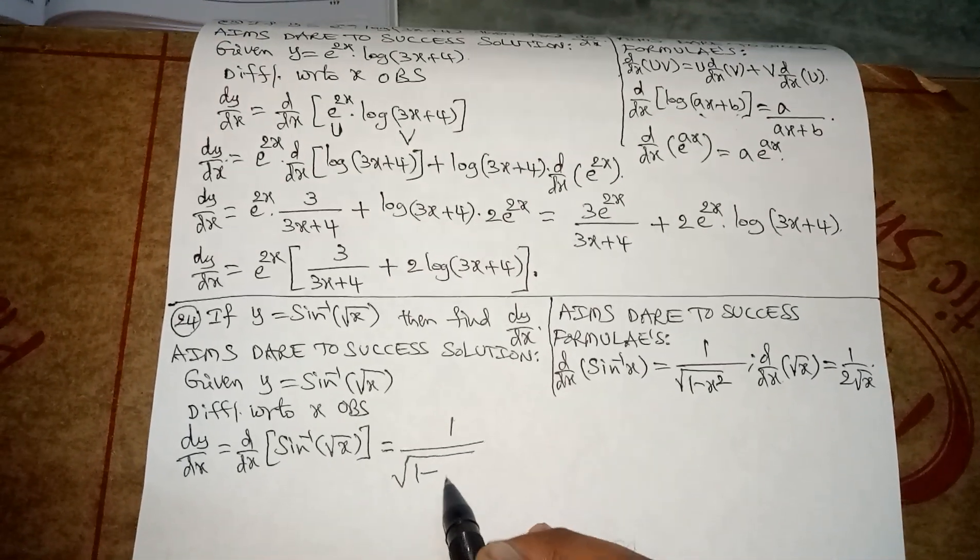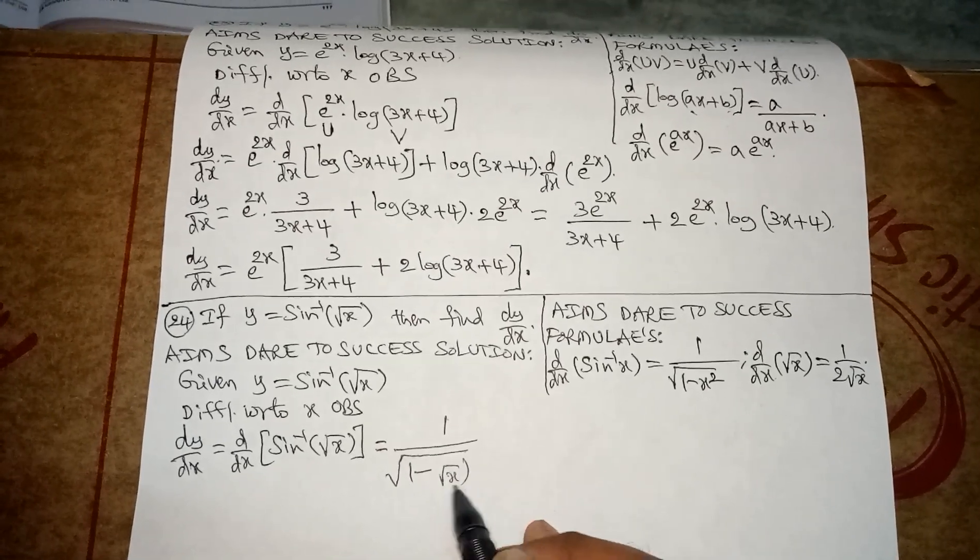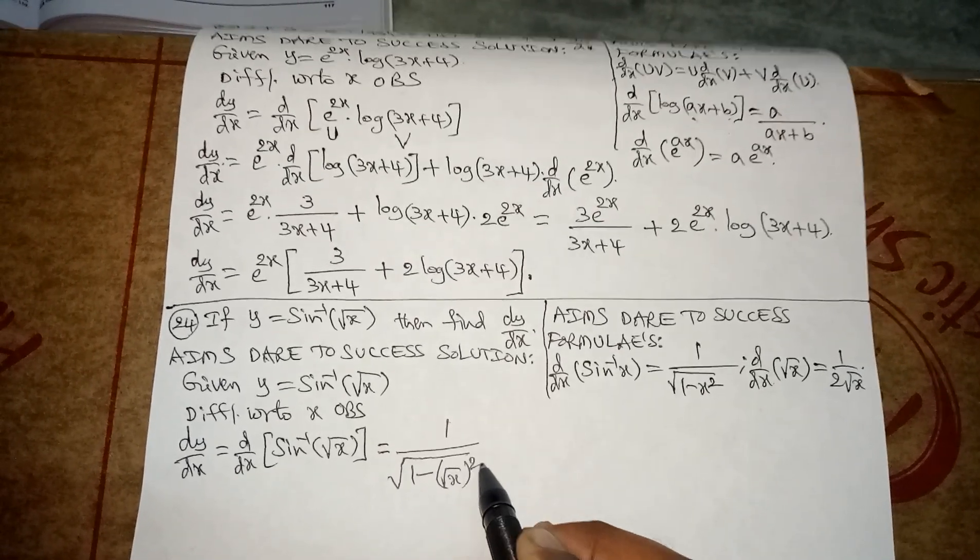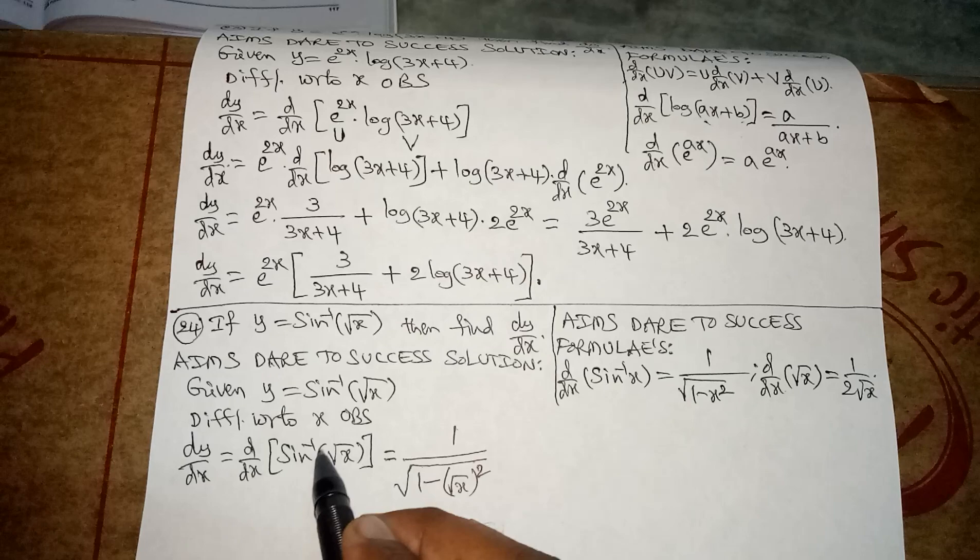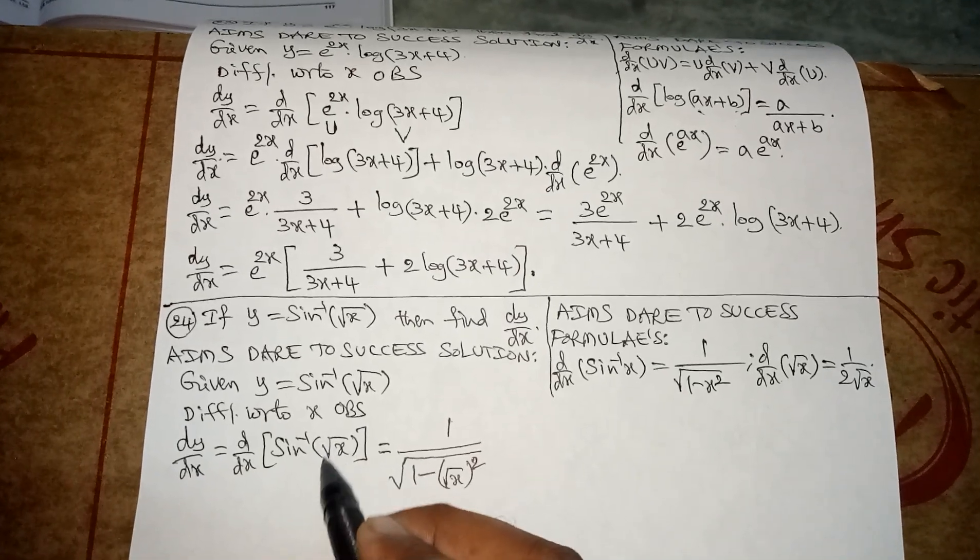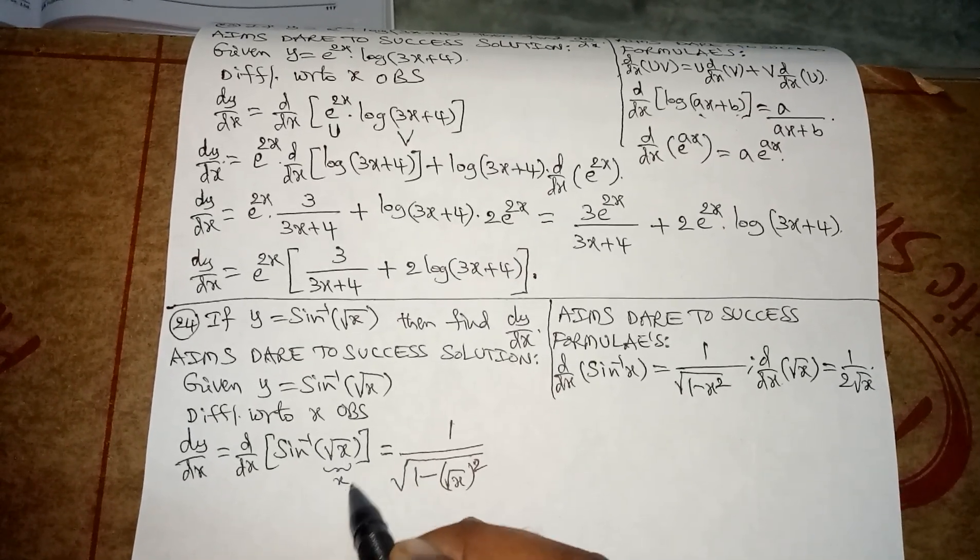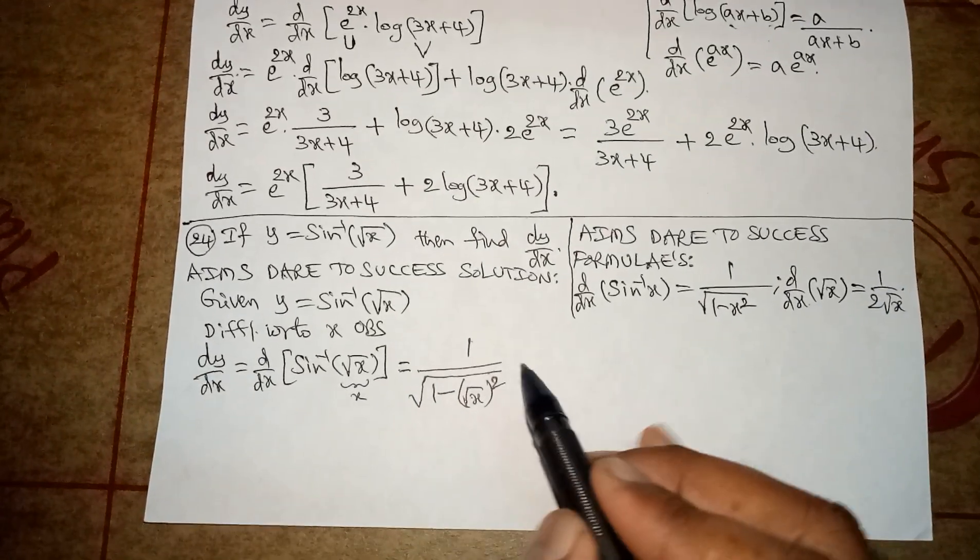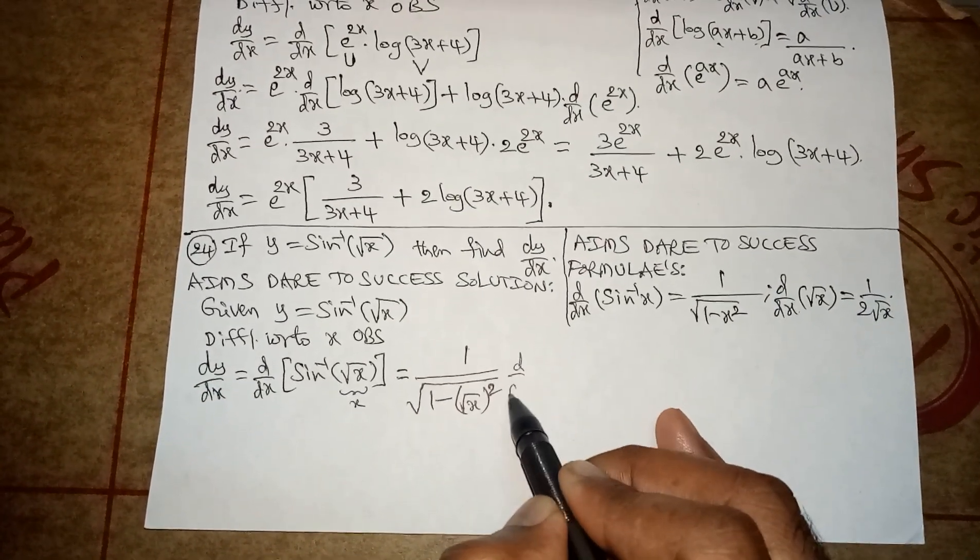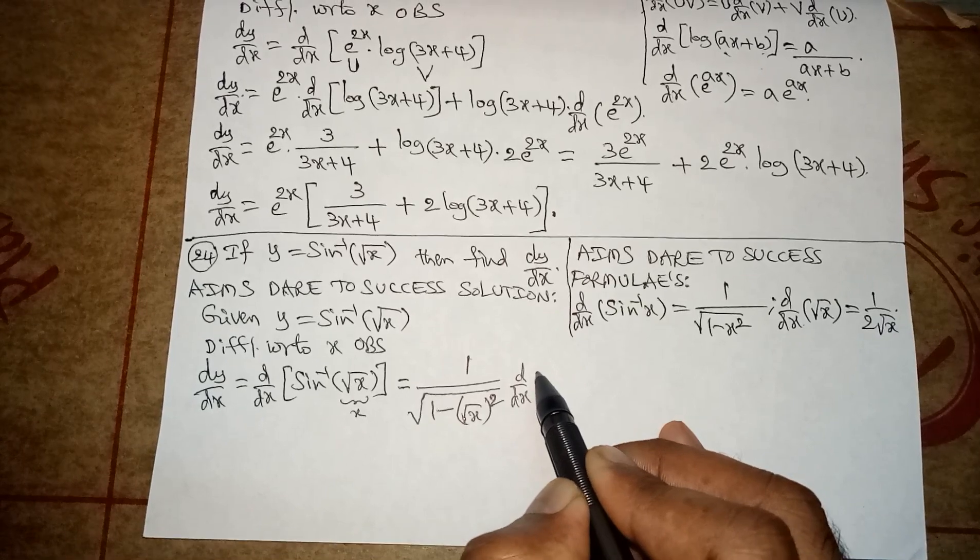And the inside value looks like x only but not exactly x, so that's why I want to take derivative of the internal value root x. d by dx of root x is 1 by 2 root x.